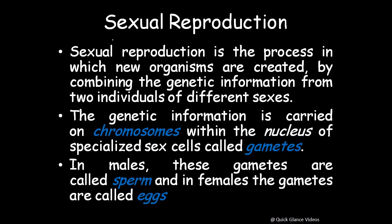In the last video we studied about asexual reproduction, where offspring are produced similar to the parent with the same genetic material. Sexual reproduction is the process in which new organisms are created by combining genetic information from two individuals of different sexes. Two individuals, say A and B, contribute genetic material and create a third individual with genetic material from both.